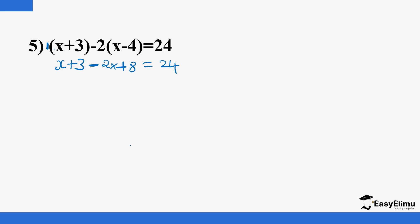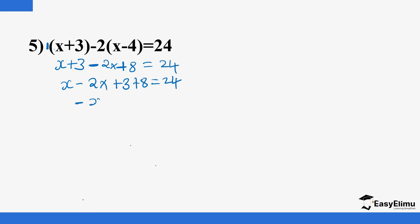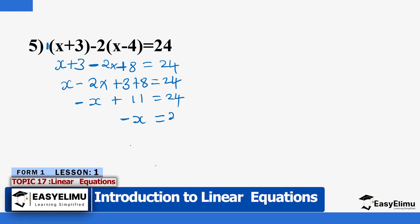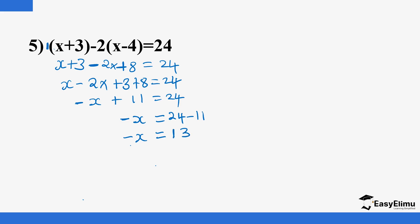We collect the like terms together: x minus 2x plus 3 plus 8 equals 24. This gives negative x plus 11 equals 24. So 11 crosses to the other side and the sign changes to minus: negative x equals 24 minus 11, which is 13. To remove the negative sign, multiply both sides by negative 1. Negative 1 times negative 1 is positive 1, so we have x equals negative 13.